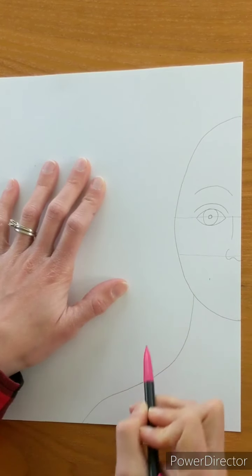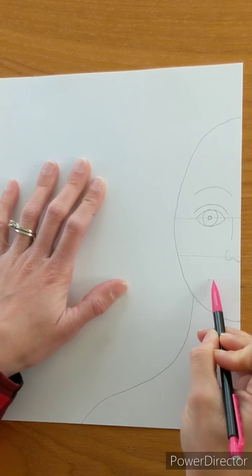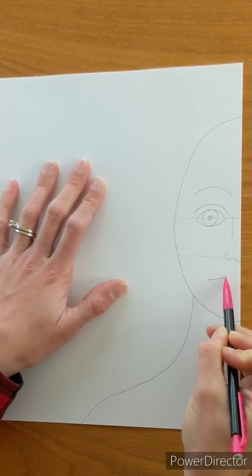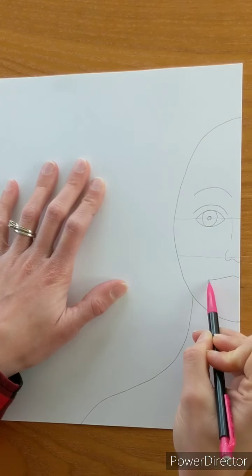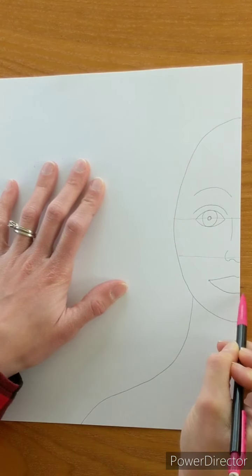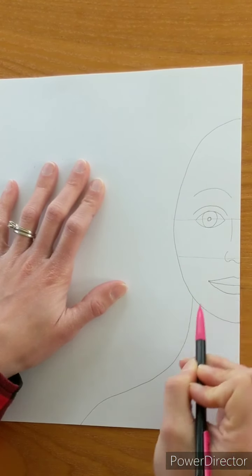Halfway between your nose and your chin, in the middle of your pupil, you're going to draw the corner of your mouth, the top and the bottom, and then draw a line through the middle to separate your lips.